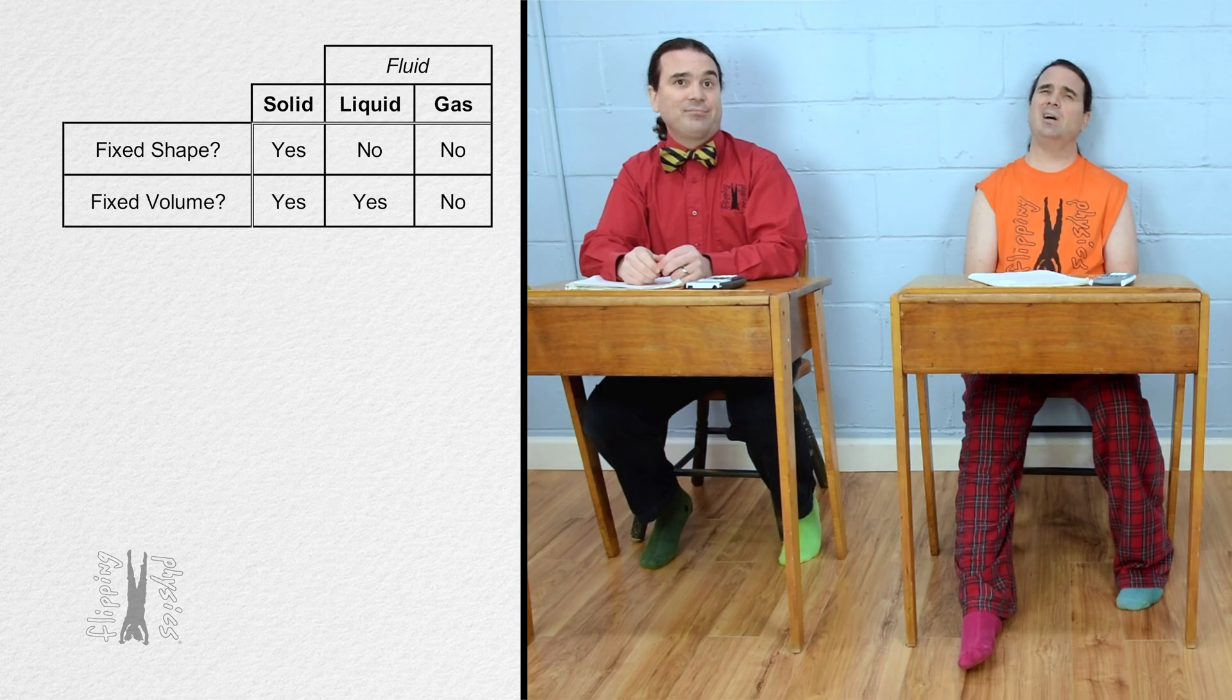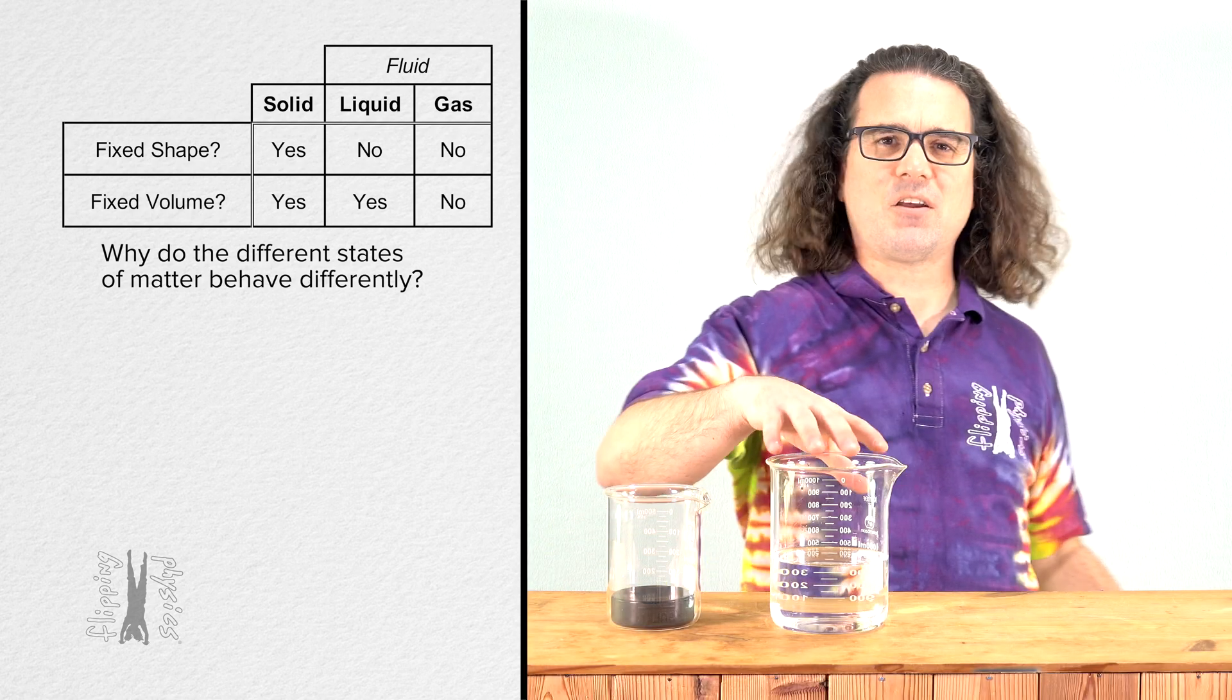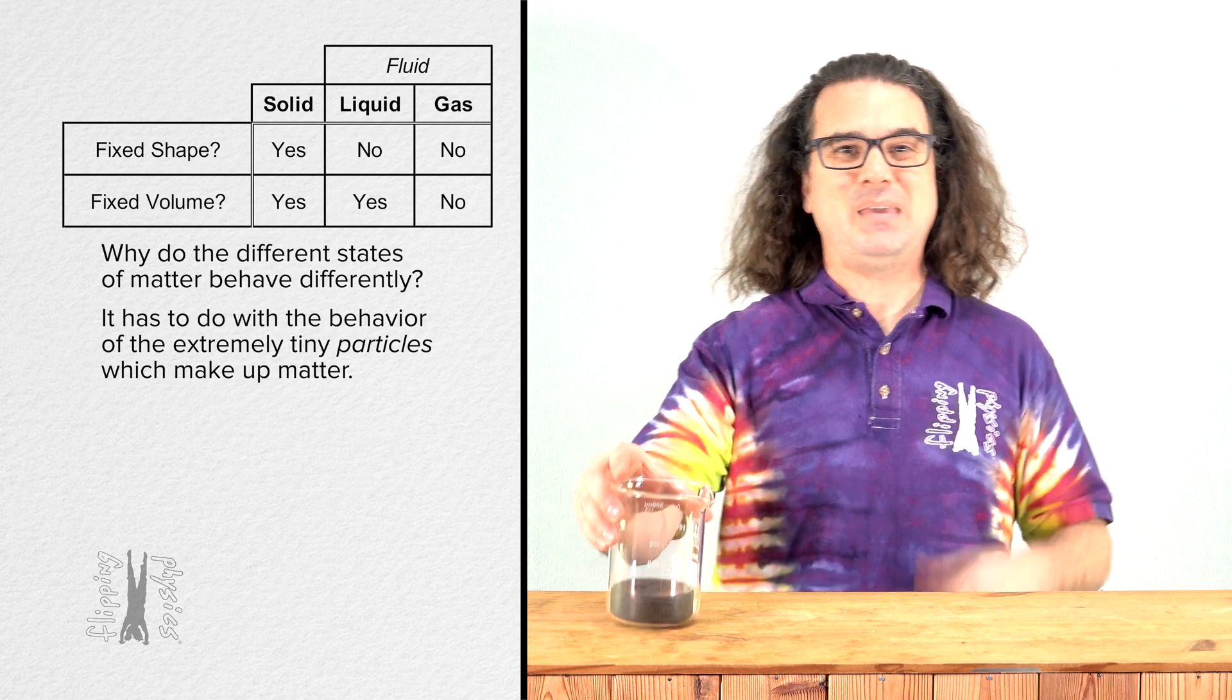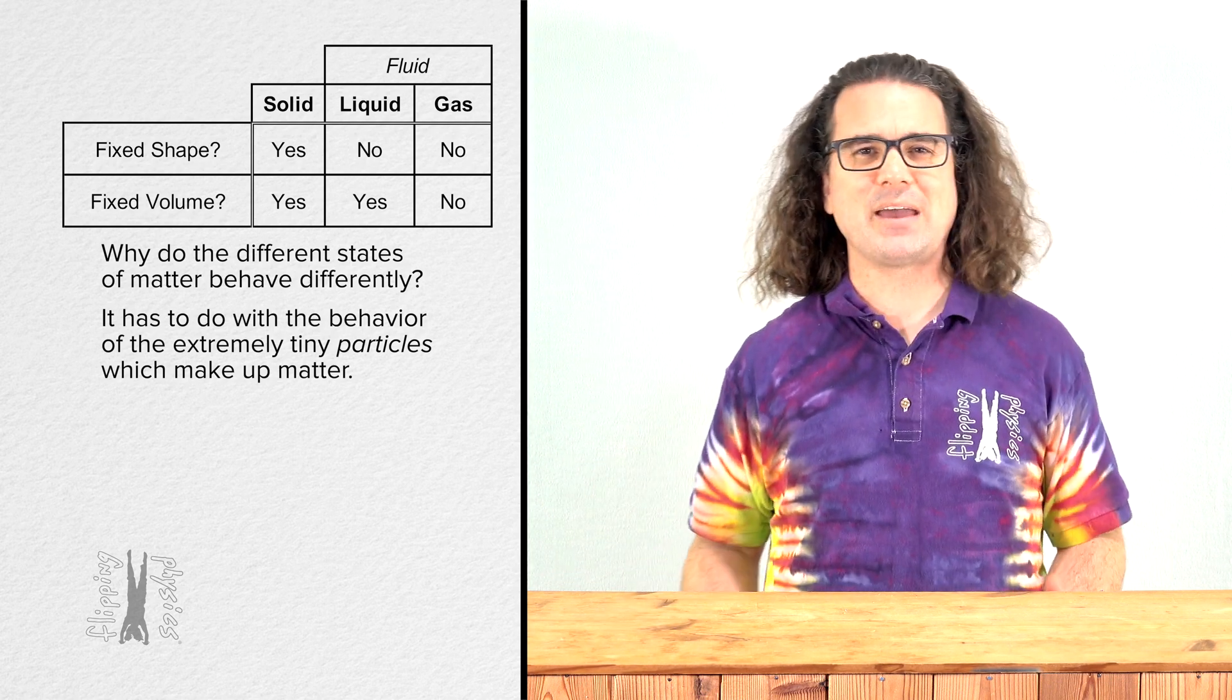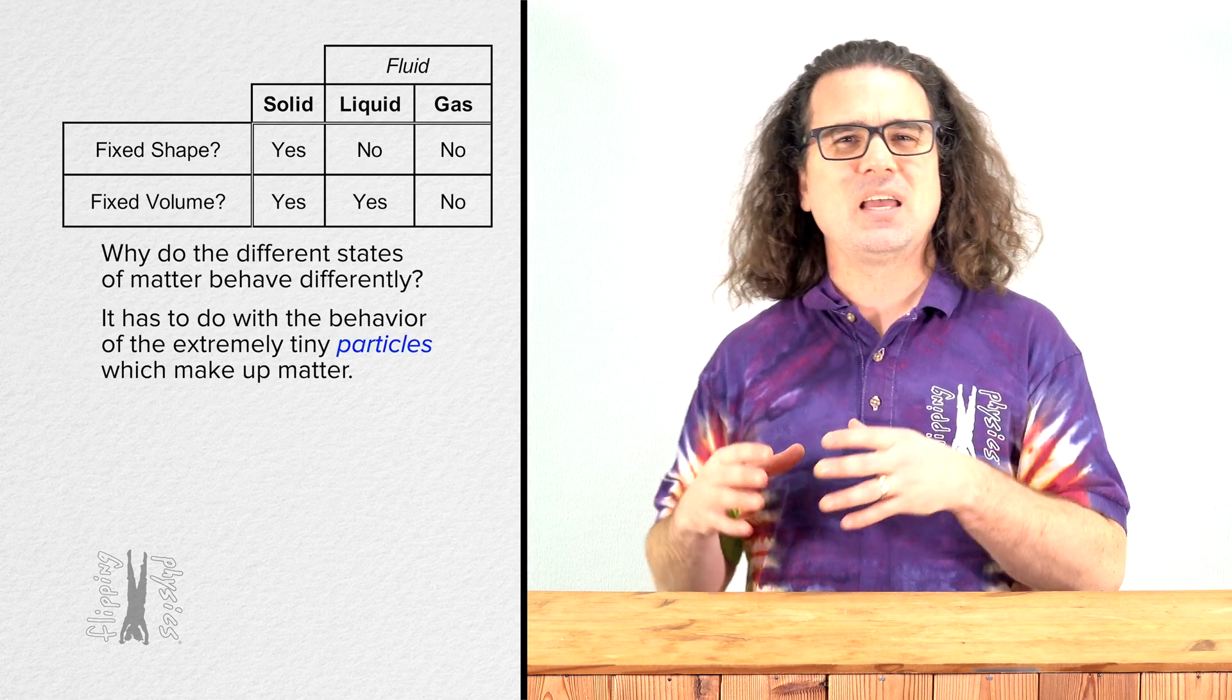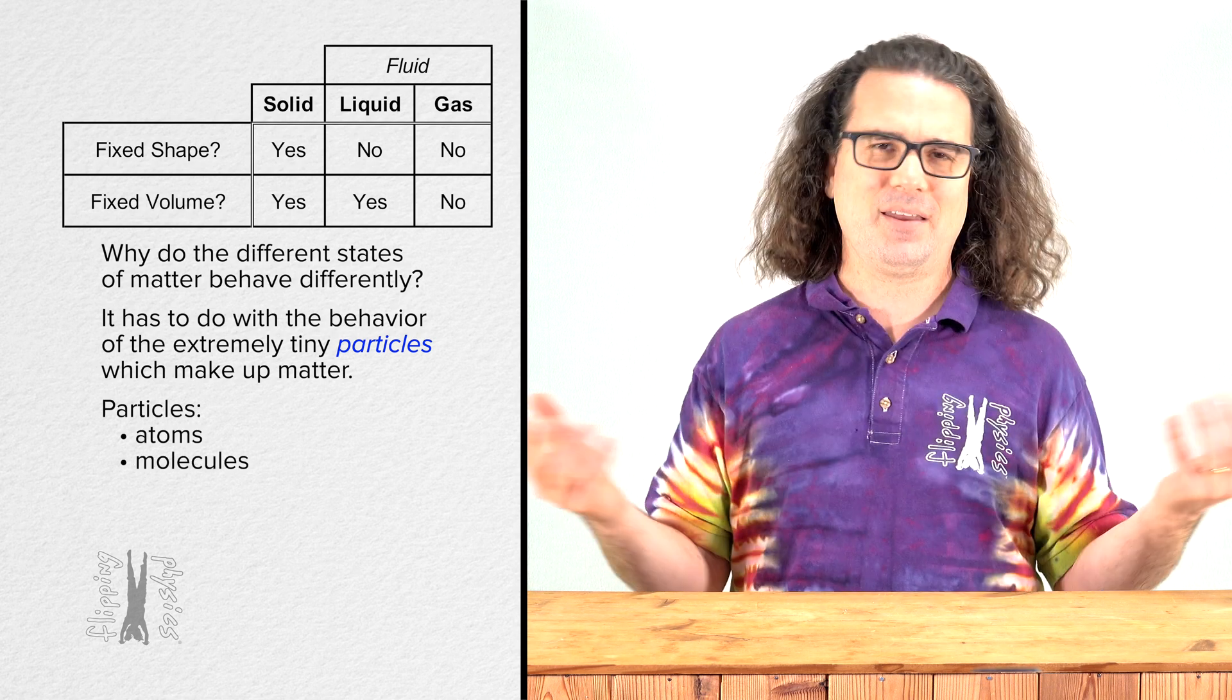But why? What do you mean, Bobby? Why do the different states of matter behave differently? That is a fair question. It comes down to the behavior of the extremely tiny particles which make up matter. For our purposes today, we will use the term particles and not worry about whether they are atoms or if they are molecules which are composed of atoms.